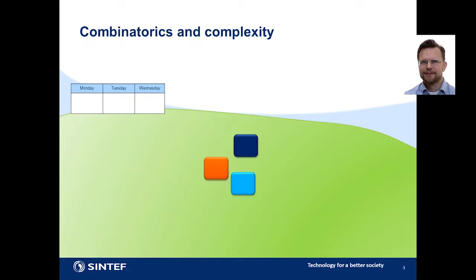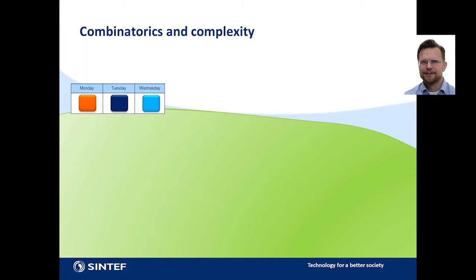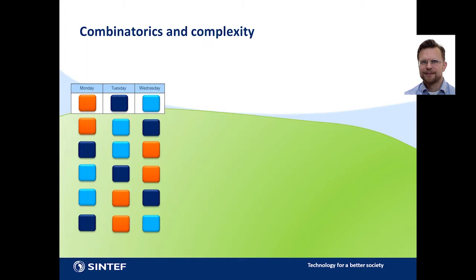Let's say at the beginning of next week, you're going to do three tasks: go to the cinema, visit your parents, and do grocery shopping. You have to decide when to do each — it's a planning and scheduling task. One possible solution is cinema on Monday, parents on Tuesday, grocery shopping on Wednesday. But with three tasks, we actually have six different possible solutions, and some solutions might be better than others.